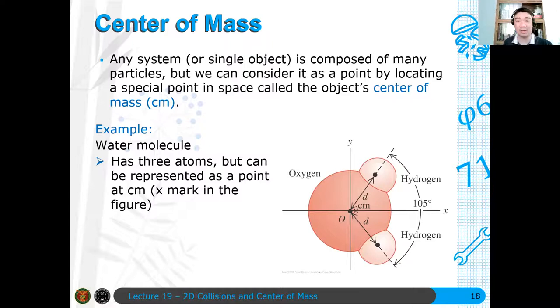Any system is composed of many particles, but we can consider it as a point. That accumulation of particles can be considered as a single point with total mass equal to the sum of the individual particle masses. Pwede mong i-treat yan as a single particle with the total mass being just the sum of the masses of each individual particle, and the location of this point is the location of the center of mass.